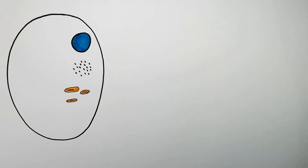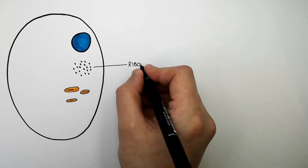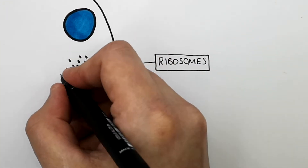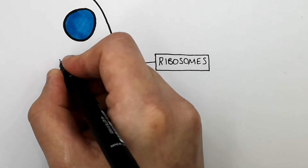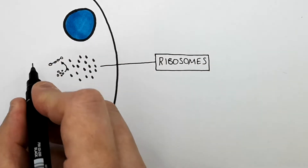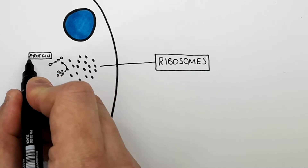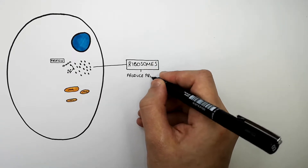We're now going to describe the function of each structured organelle of an animal cell. These are the ribosomes, and as you can see here, the ribosomes are building proteins. This here is a protein that the ribosome is building inside the cell. So ribosomes produce proteins.